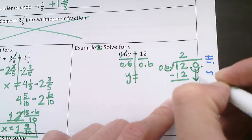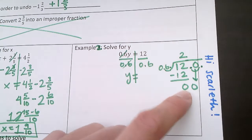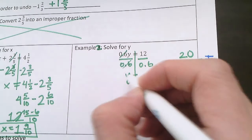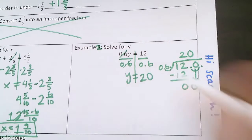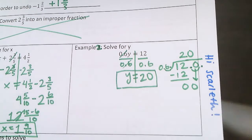Bring down this 0 and I get a 0 again. How many times can 6 go into 0? 0 times. There we go. So y equals 20. And there's my answer.